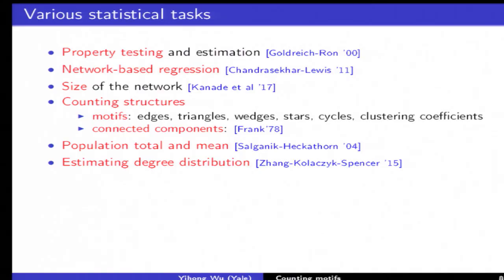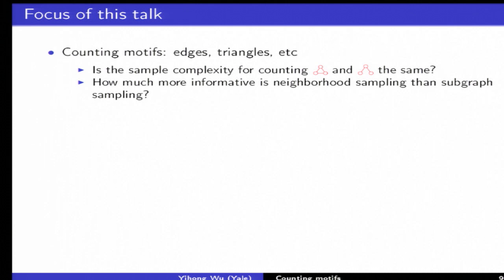There are various different statistical tasks you can do but for this talk I only focus on counting structures in terms of motifs. These are induced subgraphs, for example counting triangles. There are several questions we want to understand theoretically, for example determine the sample complexity. In particular if you want to count triangles or open triangles does it mean you need the same number of samples. Also how much more information does neighborhood sampling give you.